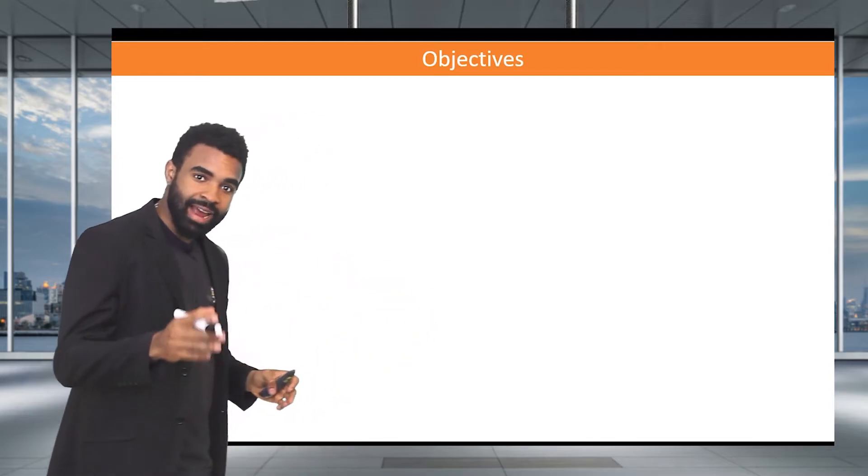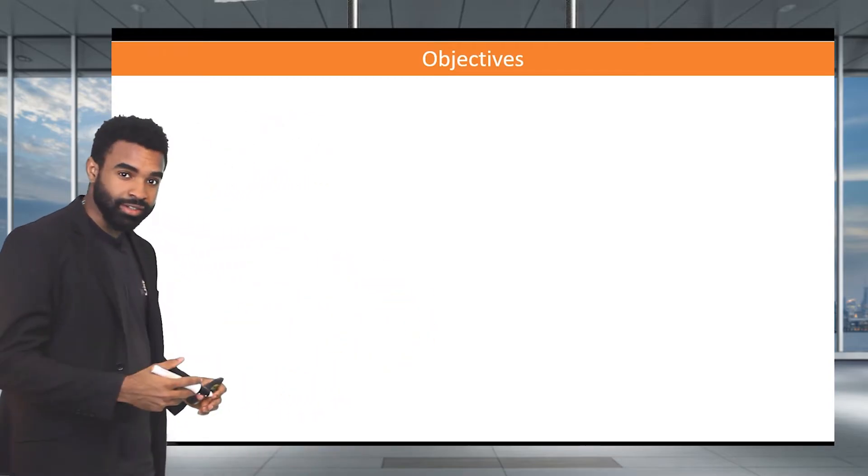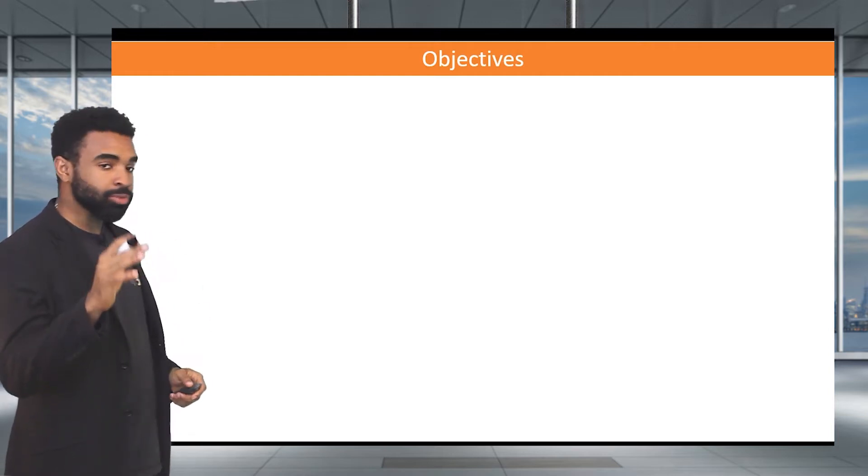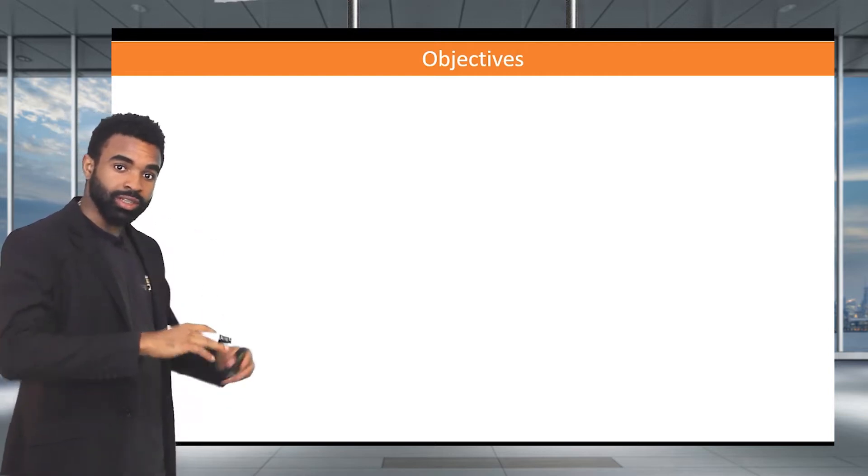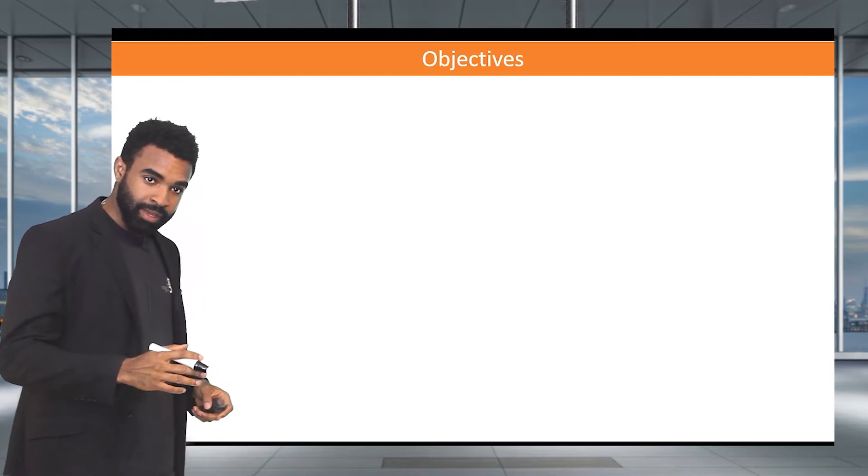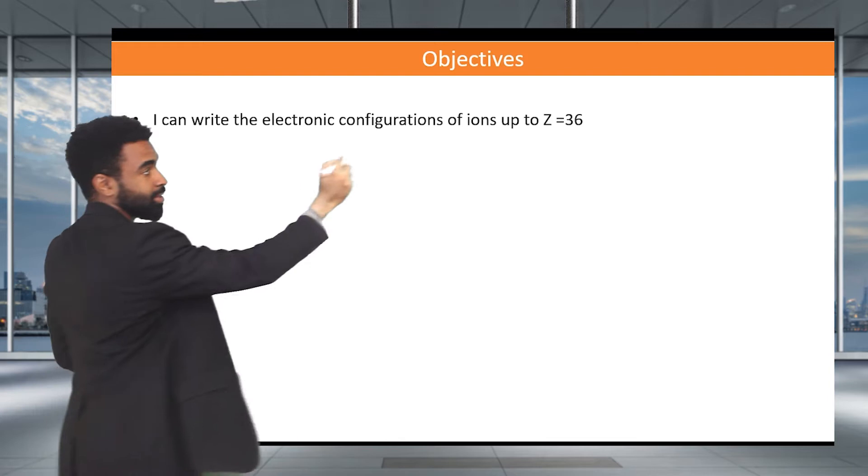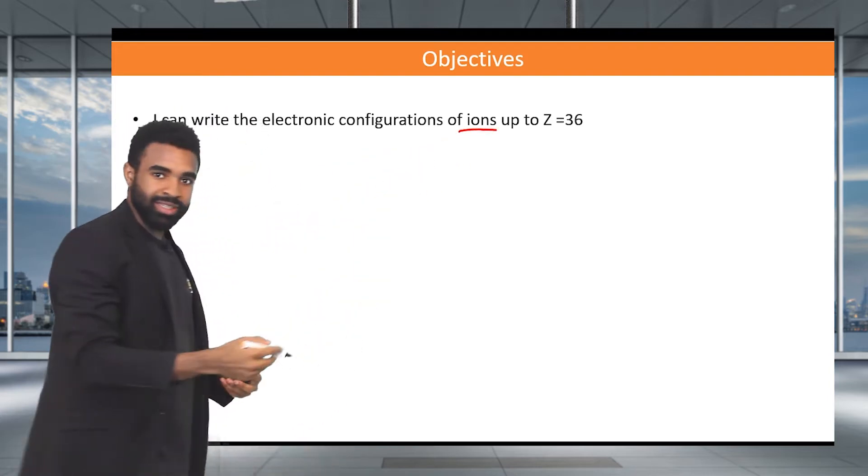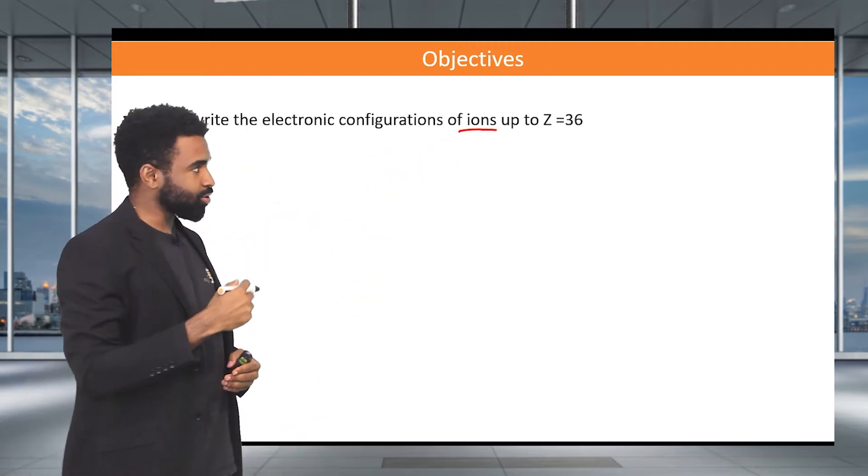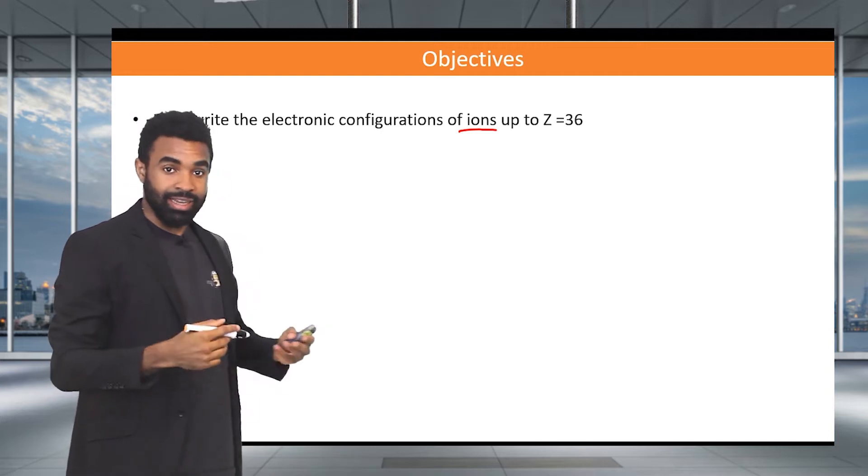In a previous video we considered how to write the electronic configurations of atoms up to Z of 36, up to an atomic number of 36. In this video we're going to expand that a little bit to include now how to write the configurations of ions, those are species that have either gained or lost electrons, up to again a Z of 36.